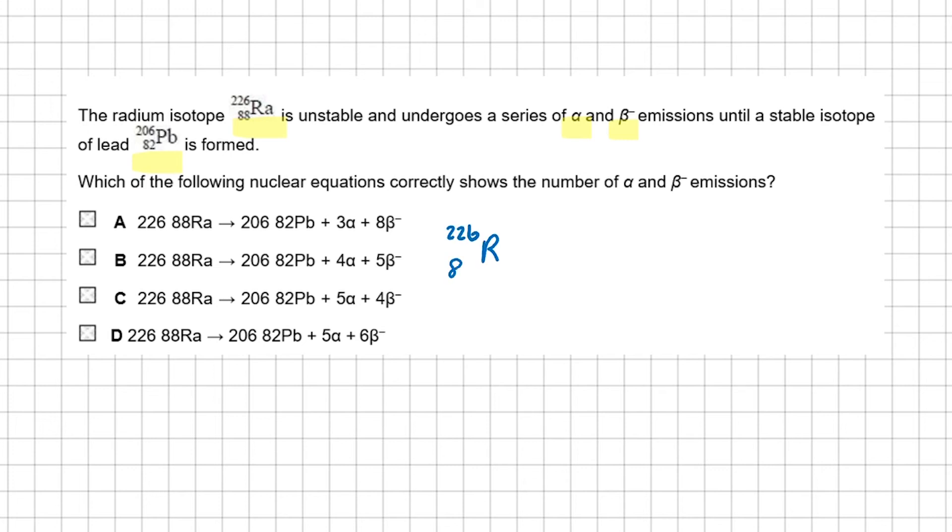Let's write down the facts that radium goes through both alpha and beta decays. Since beta decay does not change the mass number, we should look at alpha decay first. The difference in mass number between radium and lead is 20.